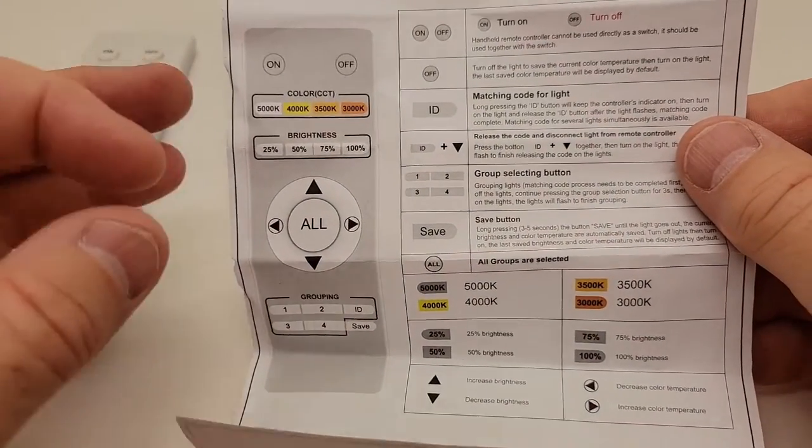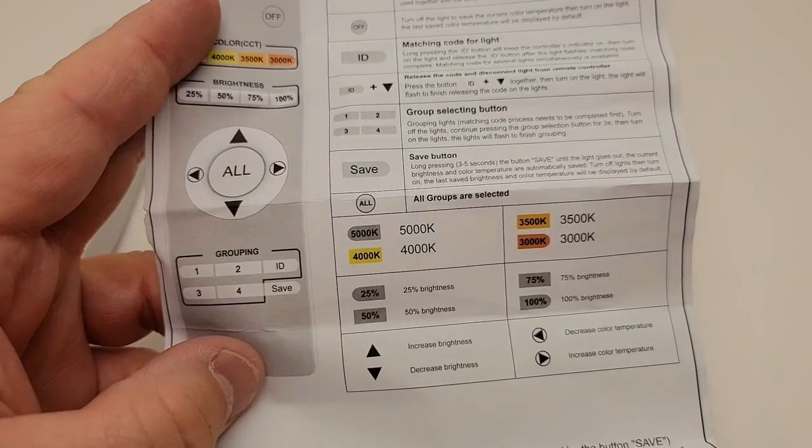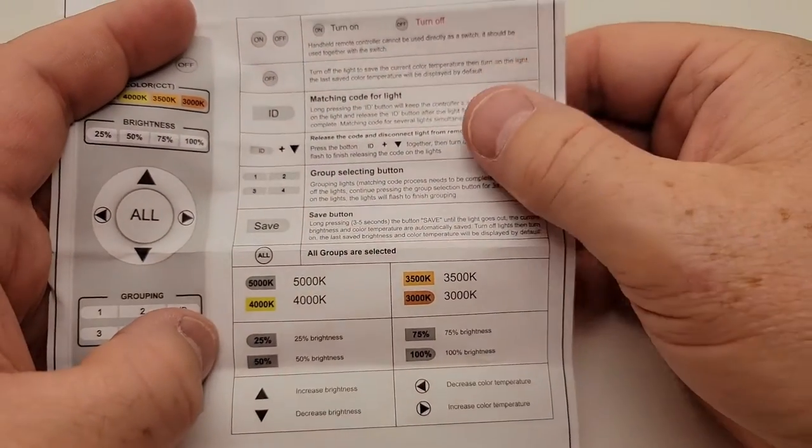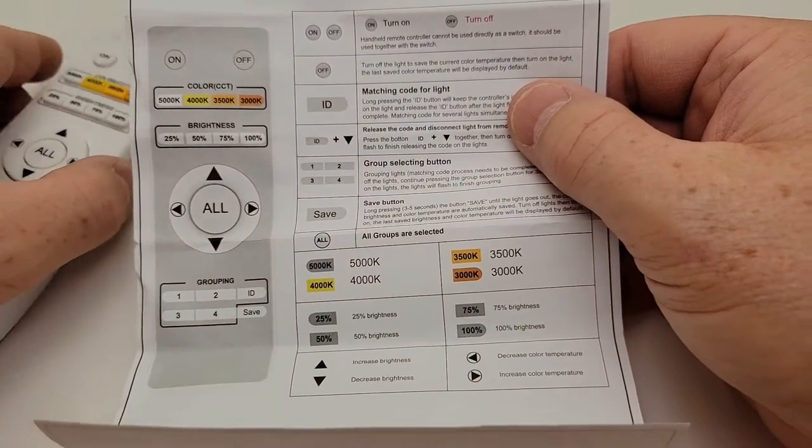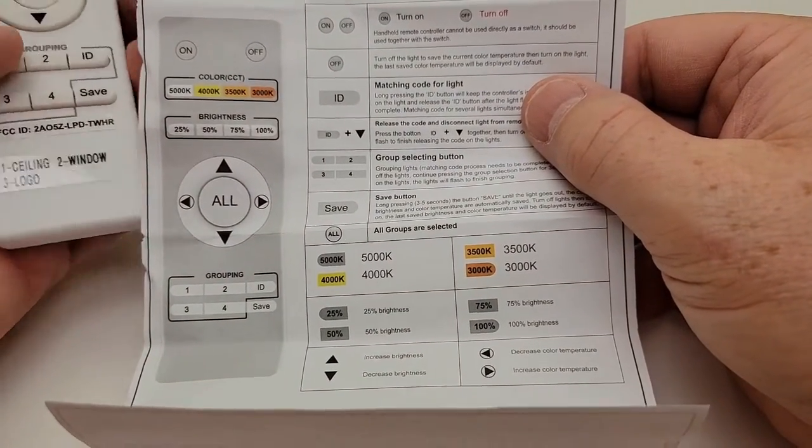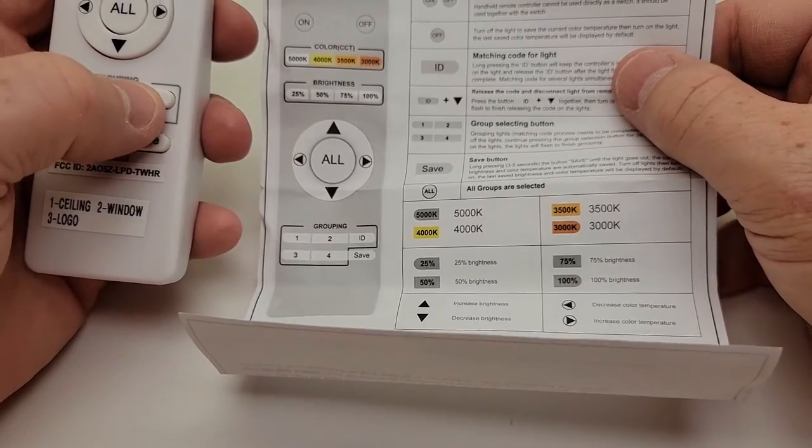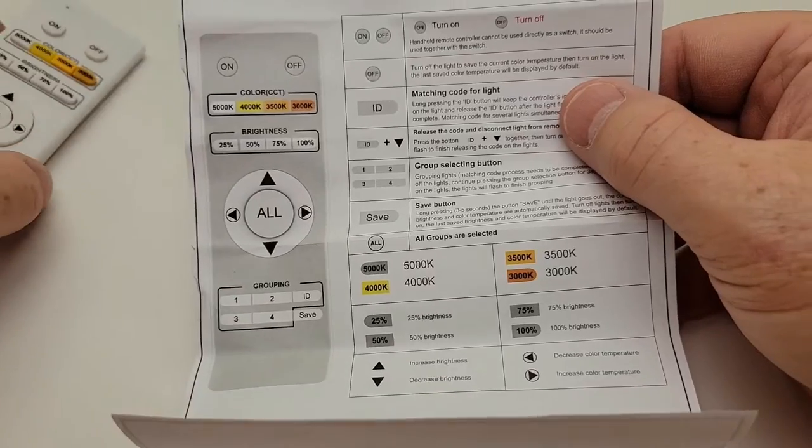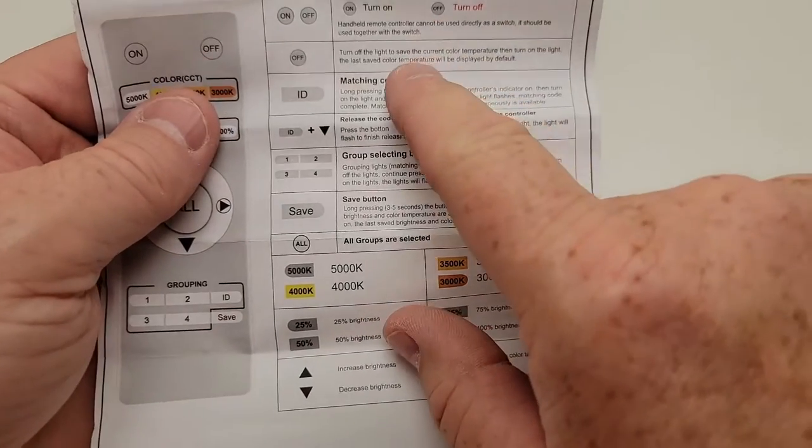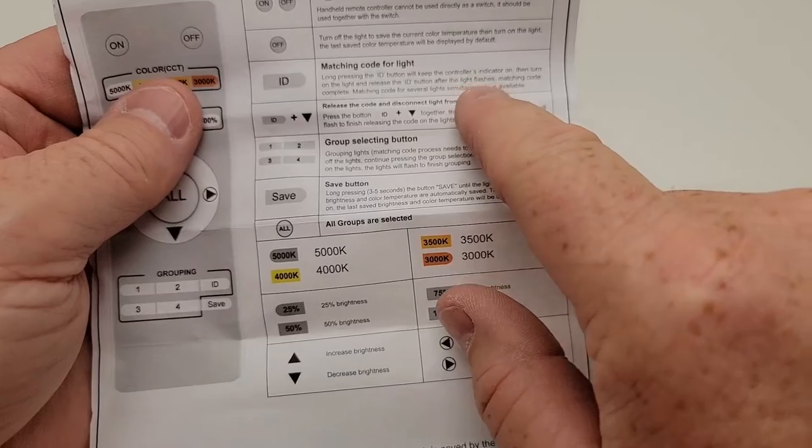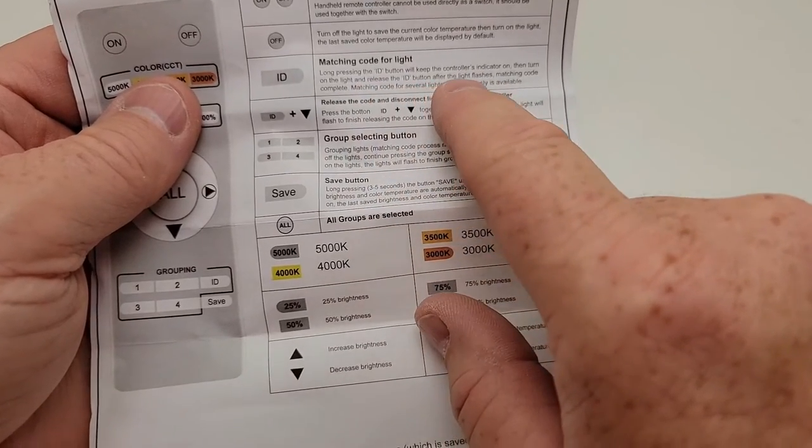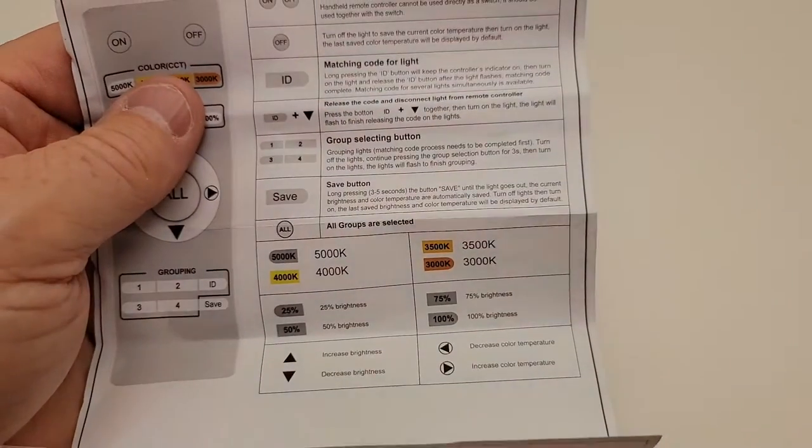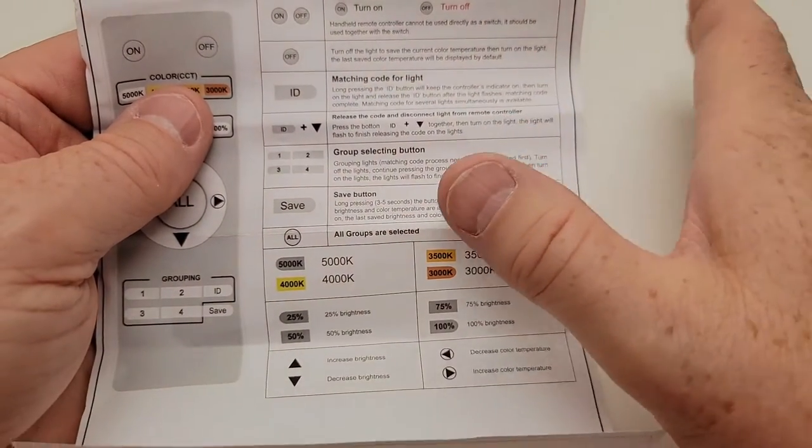Here's the instruction manual that comes with that. And pairing them was really easy. You just got to be able to unplug them and plug them back in. The way when you first get these lights, you got to do the ID button. This button right here, you're going to unplug the light or turn the switch off. Hold this ID button down and then you're going to turn the lights on. The ID button will flash. The lights are going to flash. Matching code complete. So it was very, very easy.